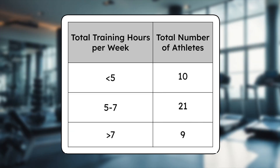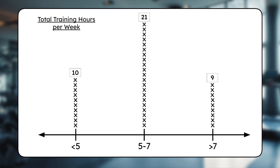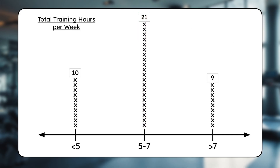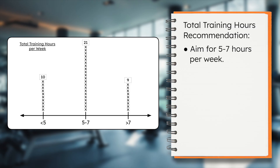Does your frequency chart match mine? Here's the data displayed on a line plot. Each X stands for one athlete. You might notice the line plot looks similar to a bar graph, just without a vertical axis. What's the mode, or most frequent training amount? Most athletes train between five and seven hours per week — that's a useful insight for our guide. Future athletes should aim to spend about five to seven hours each week training across all three events. This range seems both realistic and effective based on what current athletes actually did.